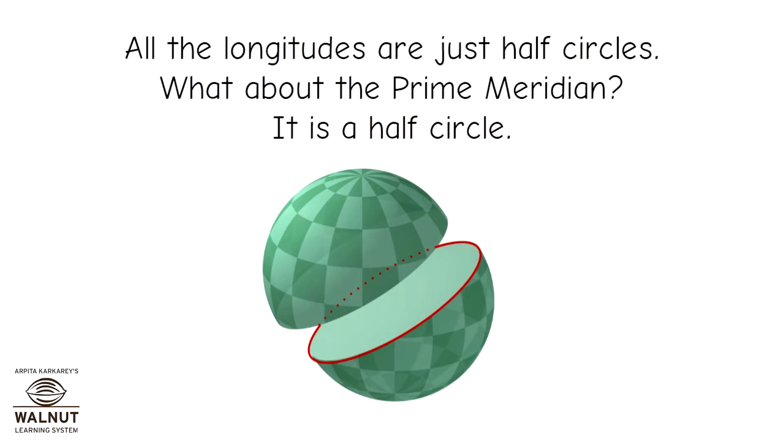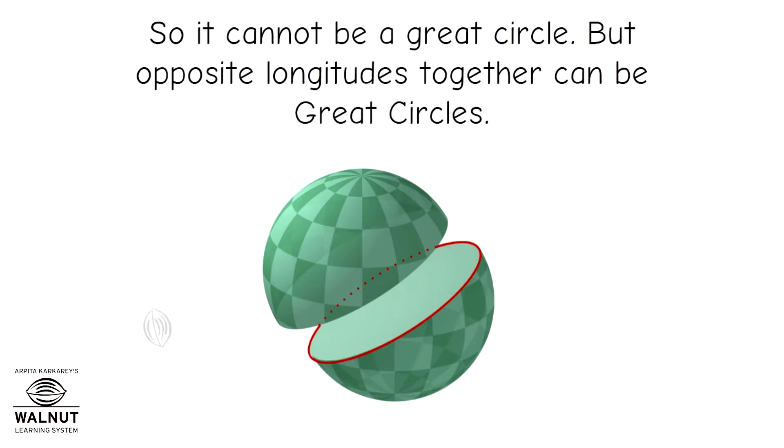All the longitudes are just half circles. What about the prime meridian? It is a half circle. So it cannot be a great circle.